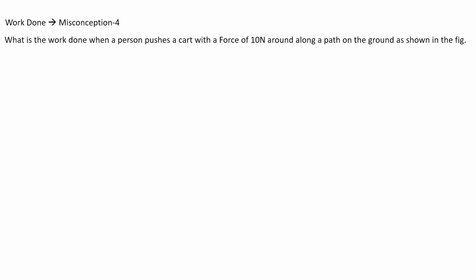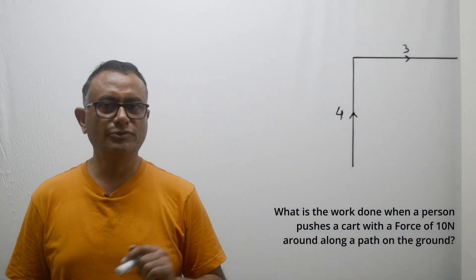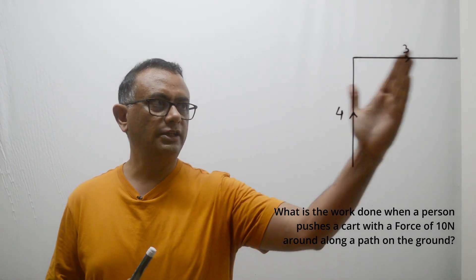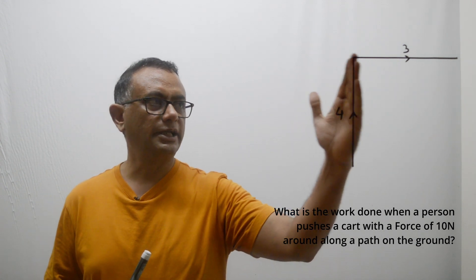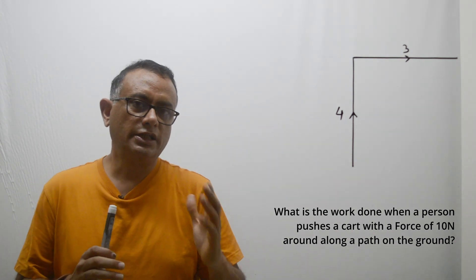The first numerical is about a person pushing a cart with a force of 10 newtons, in an L-shaped direction as shown here — four meters and three meters, each perpendicular to each other. The person is pushing the cart in this L-shaped fashion: first pushing the car four meters, then changing direction and pushing it perpendicular to the earlier direction by three meters.